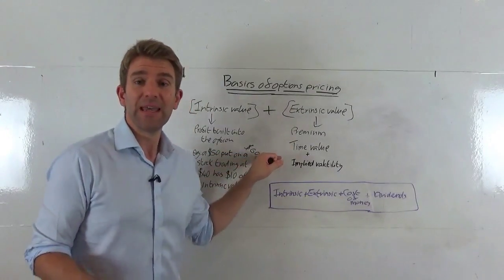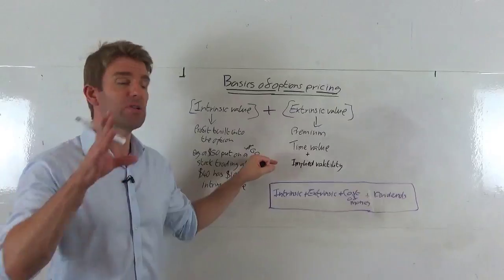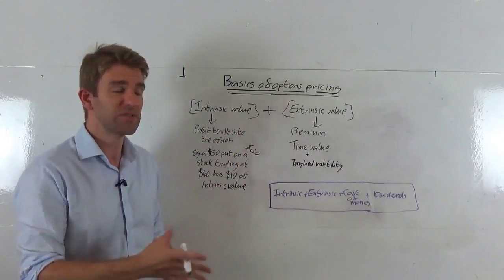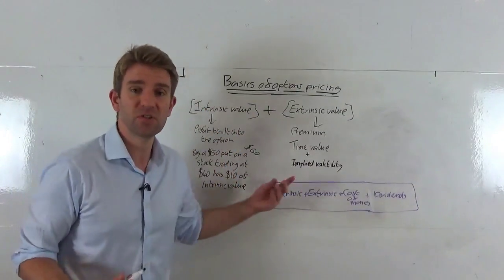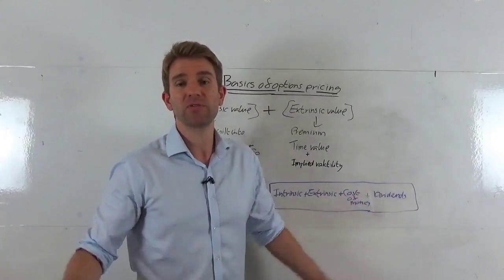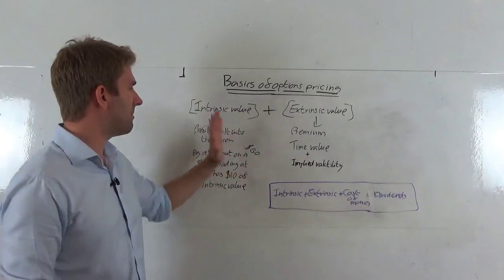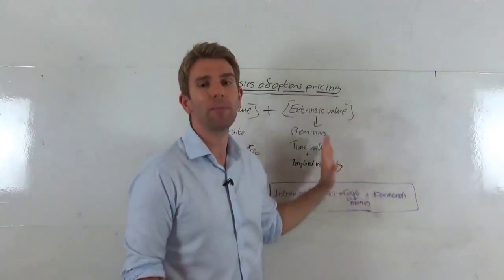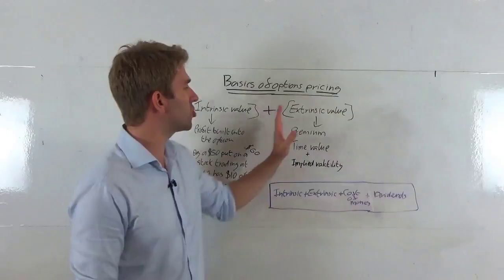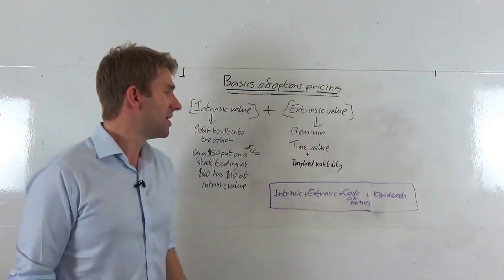At the moment, there's no profit built into it. If it expires where it is, you've got the right to sell something at 50 that's currently trading at 60. No dice, no good. Out of the money, we have no intrinsic value, but in the money we do have. This comes to the more complicated, more interesting part for traders, which is the extrinsic value of the option.